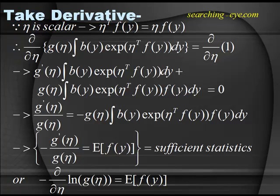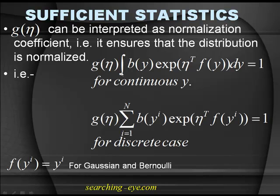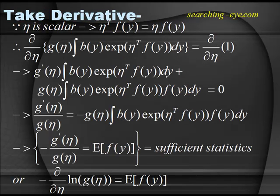The derivative of f(y) dy equals zero because differentiation of a constant is zero. Taking it to the right-hand side and using the property, g(η) times the integral of b(y) exponential(η^T f(y)) dy equals one. Multiplying and dividing by g(η), you get g'(η) over g(η) equals negative g(η) times the integral of b(y) exponential(η^T f(y)) times f(y) dy, which is just the expectation of f(y).